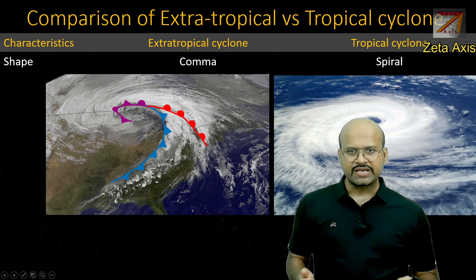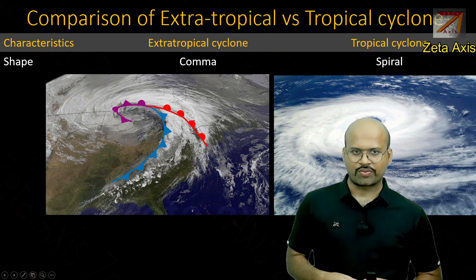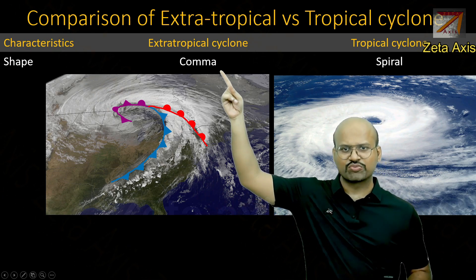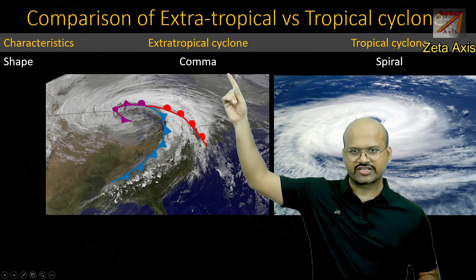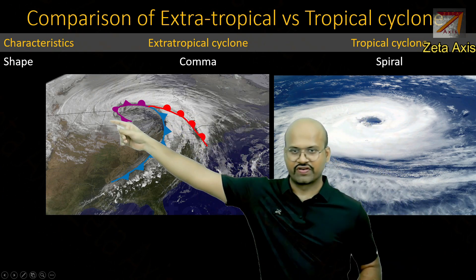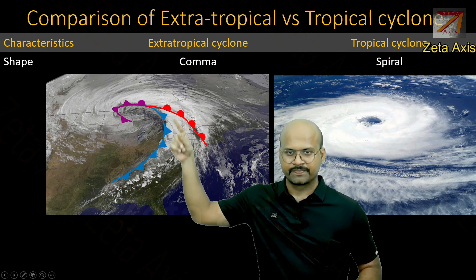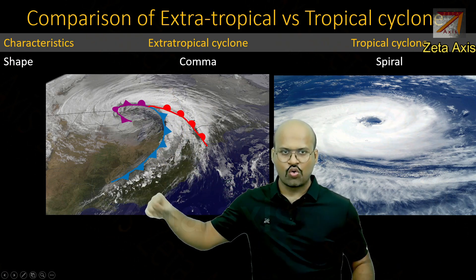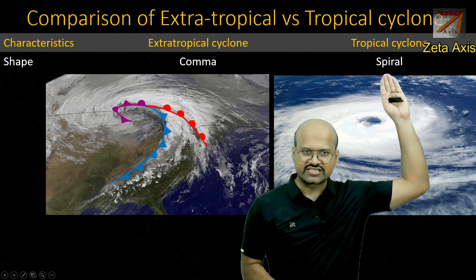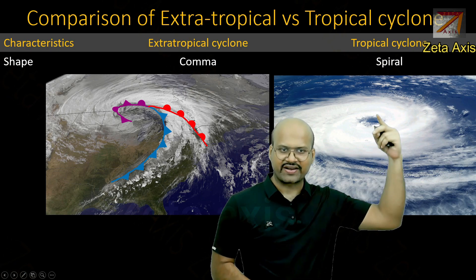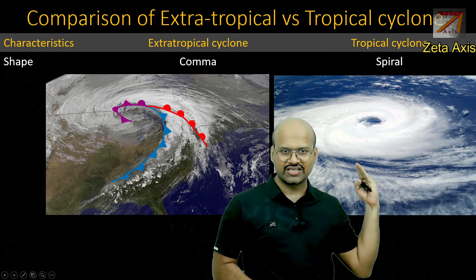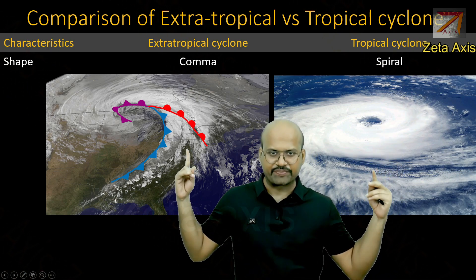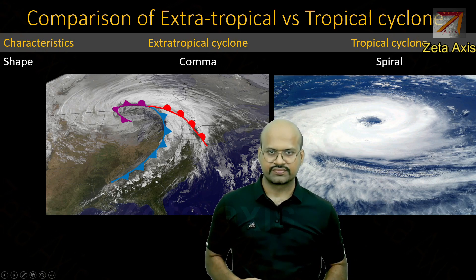Next is the shape of extratropical and tropical cyclones. The extratropical cyclone is more comma-shaped, as you can see here — it looks like a comma. While the tropical cyclone looks like a spiral. We can clearly see the difference between the shapes of both of these cyclones.